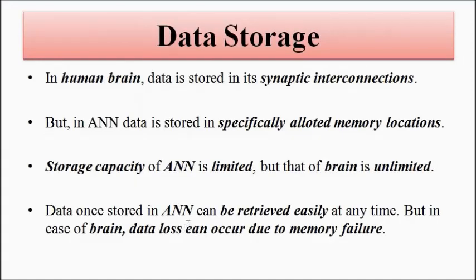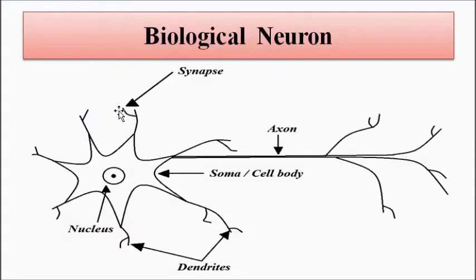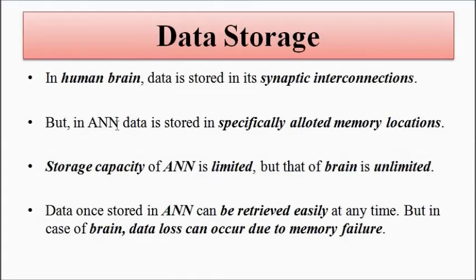The next parameter is storage — the storage of data. In the human brain, the data is stored in the synaptic interconnections. See here — the synapse — these are the branch-like structures on the dendrites. In these synaptic connections, the data or information is stored. When we remember something, that information is stored in these synaptic interconnections. But in the artificial neural network, the data is stored in specifically allotted memory locations, just as data is stored in various storage devices — hard disks, hard drives, pen drives, CD-ROMs, or whatever.